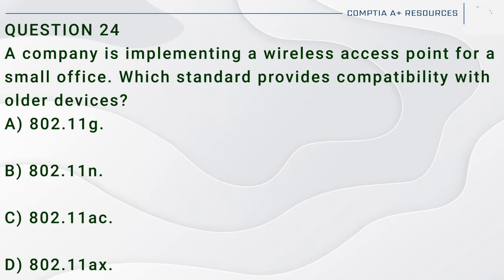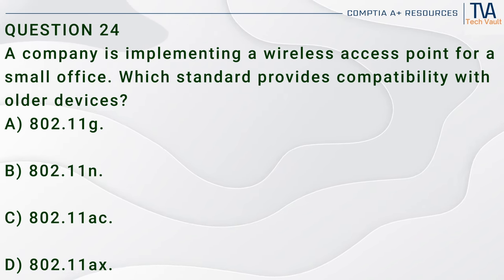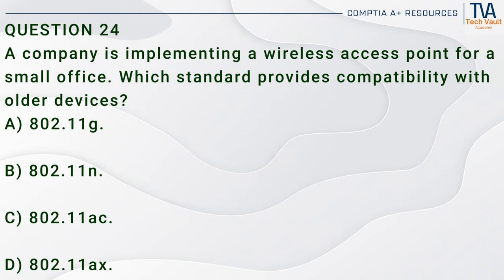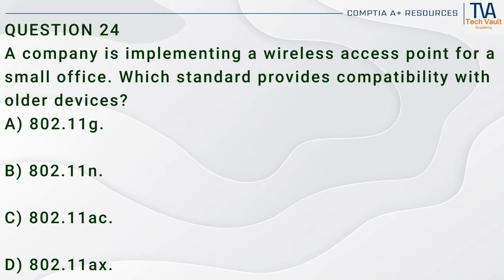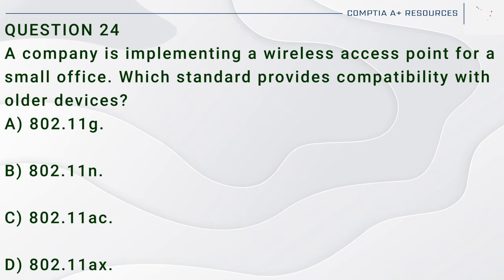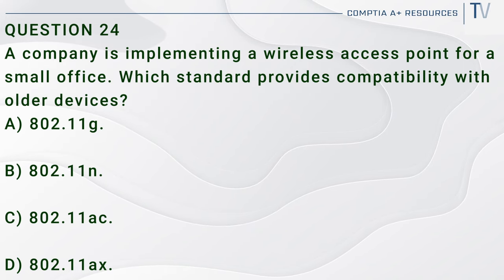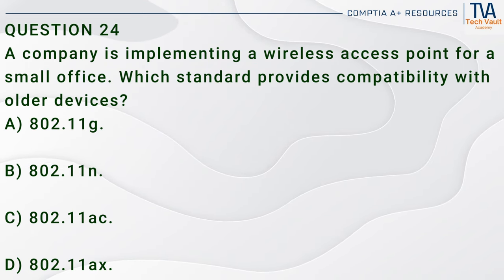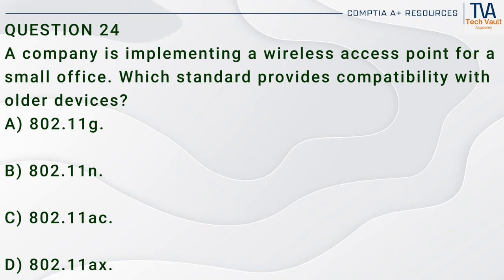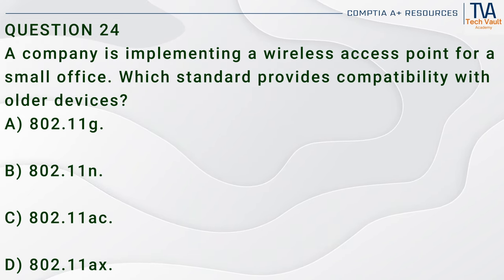Question 24. A company is implementing a wireless access point for a small office. Which standard provides compatibility with older devices? A. 802.11g. B. 802.11n. C. 802.11ac. D. 802.11ax.